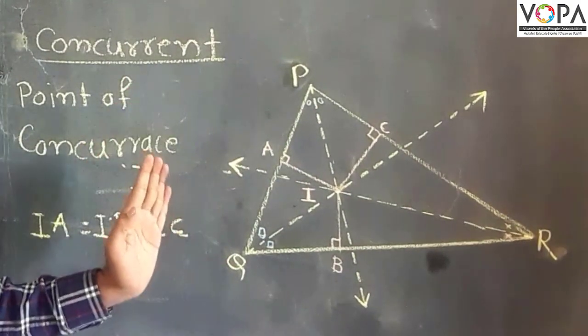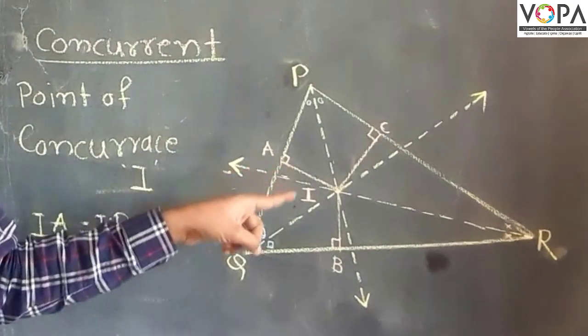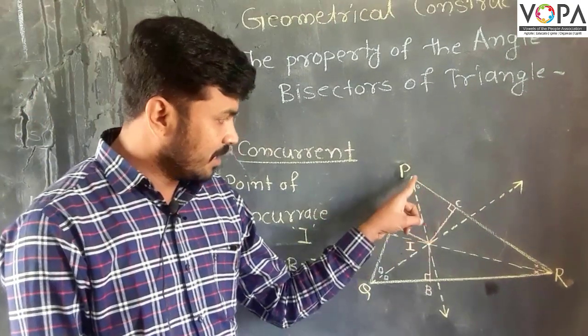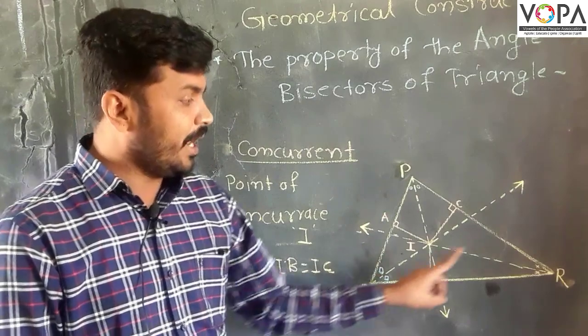With the help of a compass, we can draw the angle bisectors of this triangle: angle P, angle Q, and angle R.